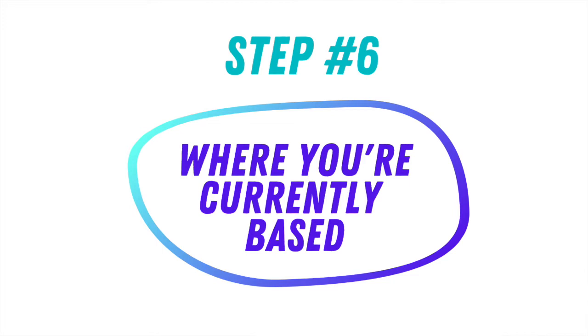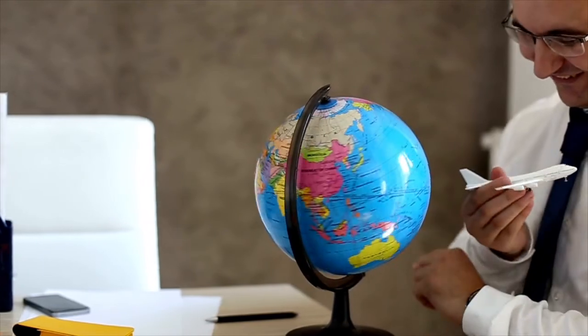After you've greeted your audience with enthusiasm, shared your name, your passions, and what you're hoping to learn from that course, chances are someone in the group has already started to find some common areas of interest. But just in case they haven't, step number 6 is where you're currently based. If you no longer live in the same city or country that you were born in, you may share both — where you were born and where you're currently based. And who knows, you might even find a local support or study group in your area.